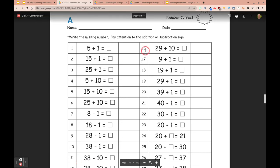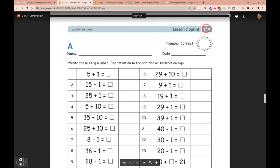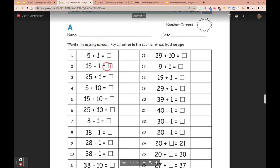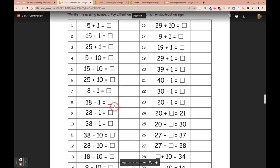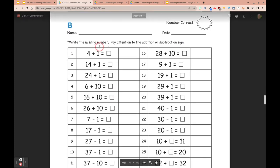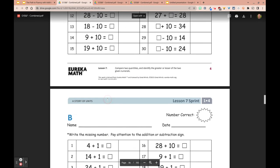If we look at a Eureka Math sprint, and this is Grade 1 Module 4 Lesson 7, and we'll look at one from third grade and fifth grade as well, the short of it is that kids get one minute to do as many problems on the front, and then they score them, take a little break, and then they get one minute to see how many problems they can do on the back. And hopefully they see growth.